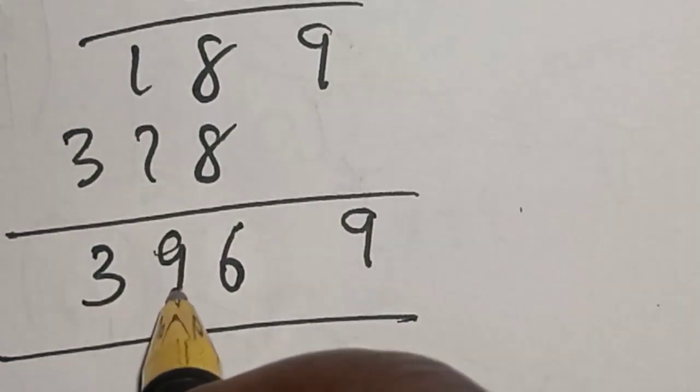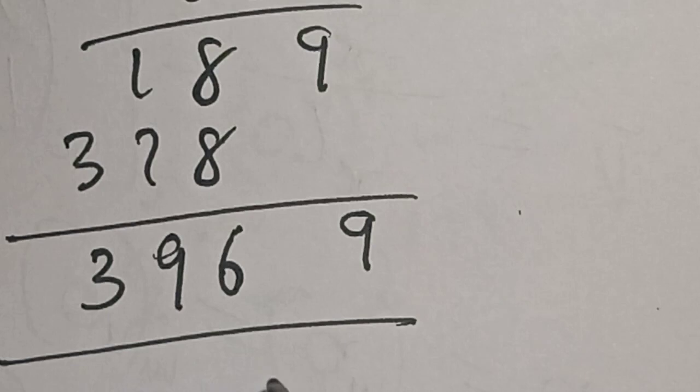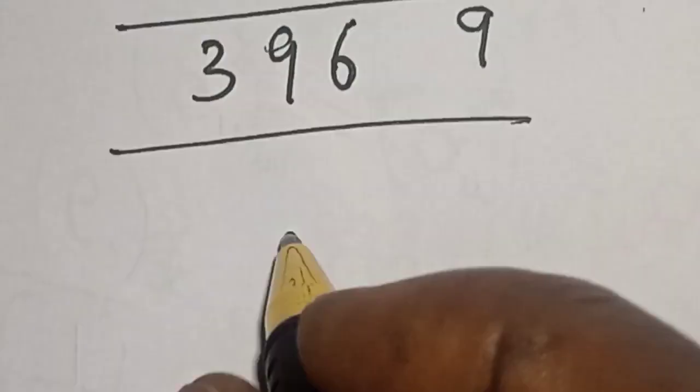7 plus 1, this is 8 plus 1 equals 9. Then here is 3, so our answer is 3969. You can see that this is a long method. Now our shortcut is you can solve this in one second.